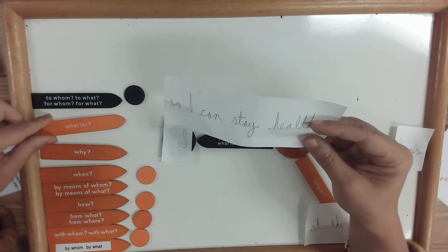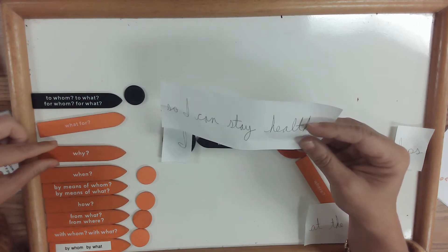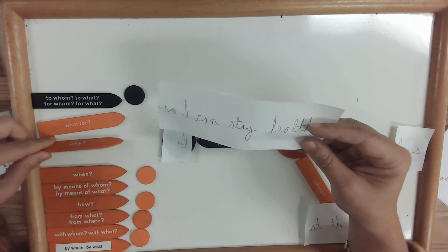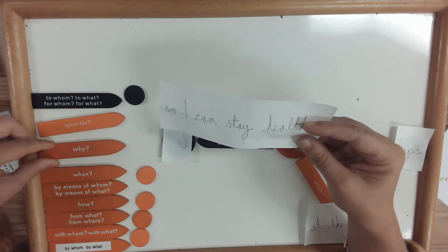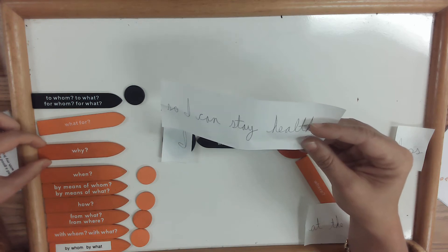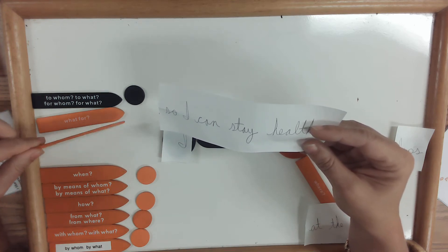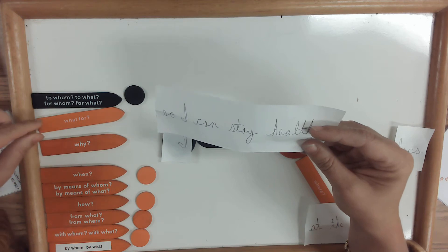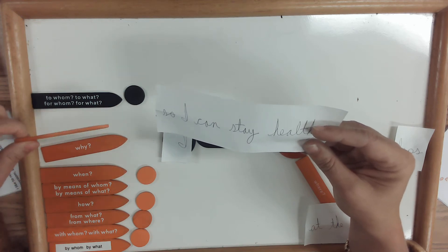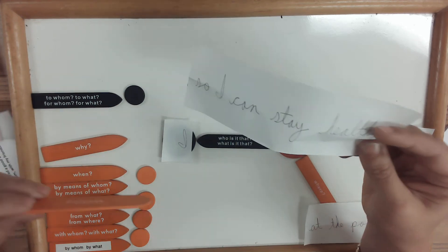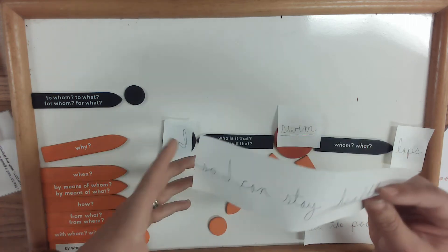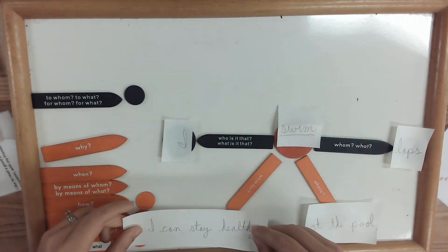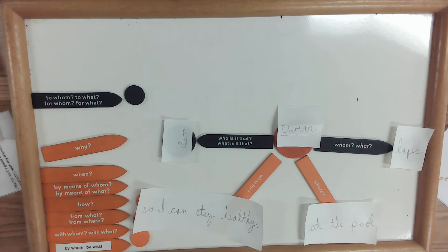'Why' answers cause — is it the cause of swimming? I would say 'so I can stay healthy' is the purpose. Perhaps the 'why' might be: I couldn't swim very well and I wanted to get stronger, so I thought I would swim laps. These can be pretty tricky — it's just a matter of thinking through which one fits best.